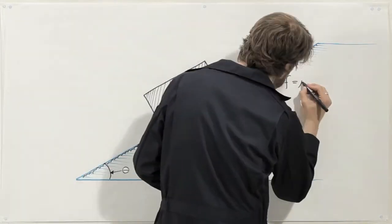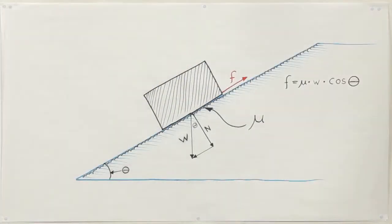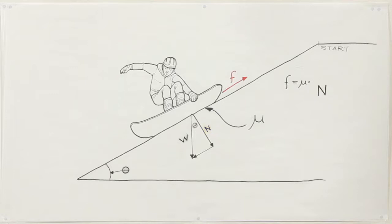Friction also depends on the force pushing the objects together. On a snowboard, for instance, that's the normal force from gravity pulling down.